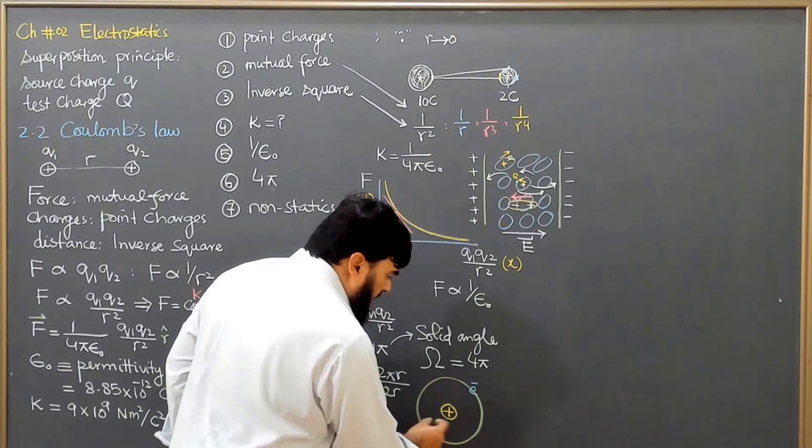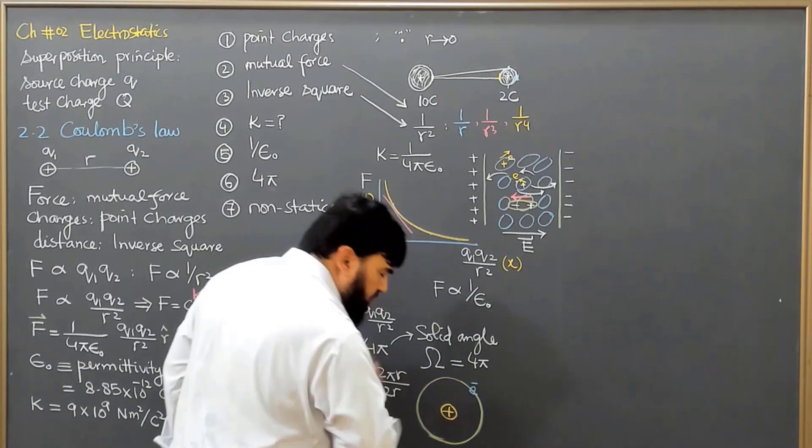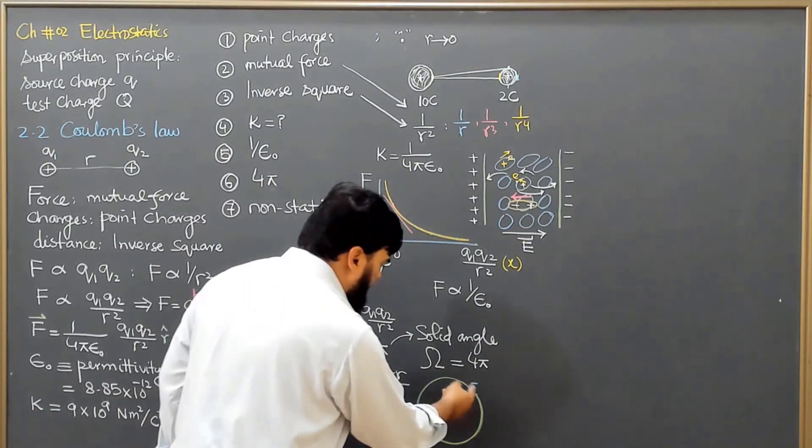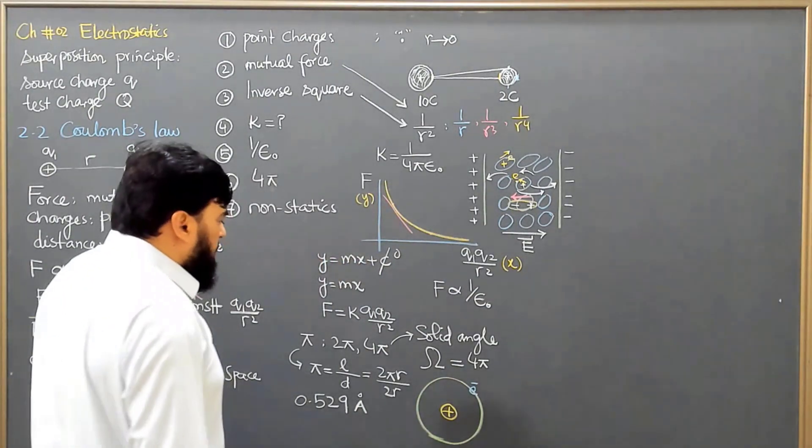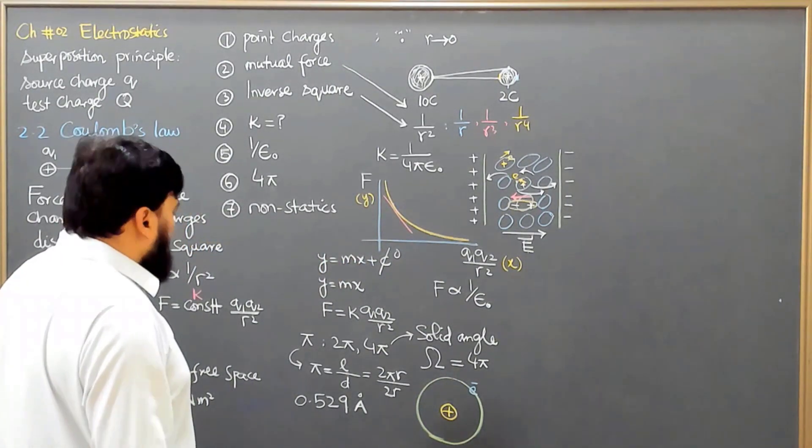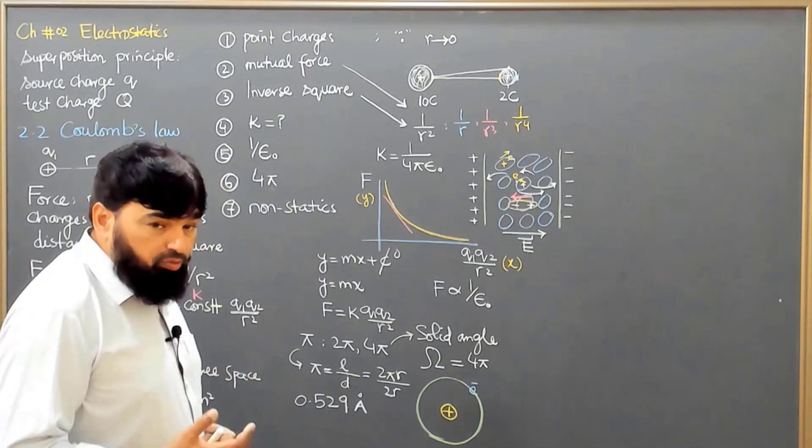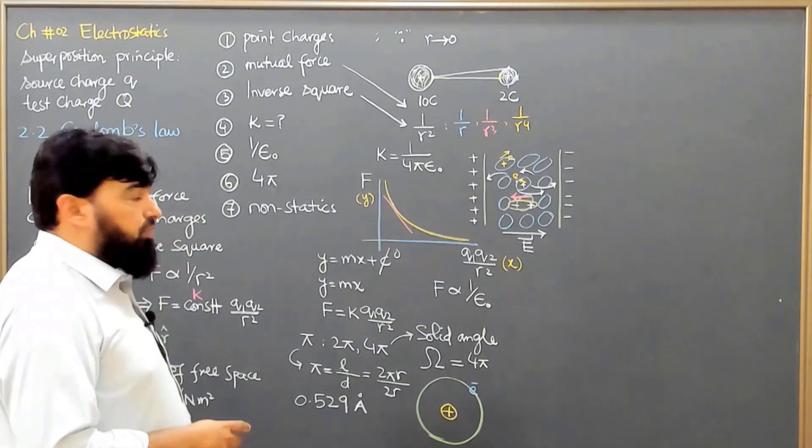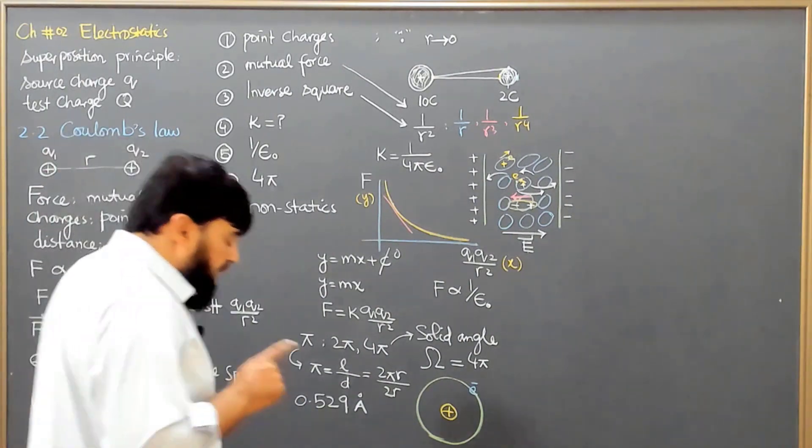It's a moving charge. Although there is some oscillations in this one, we neglect that one, but this one is a moving charge. Then why we are applying this thing and why it is giving the very accurate result?